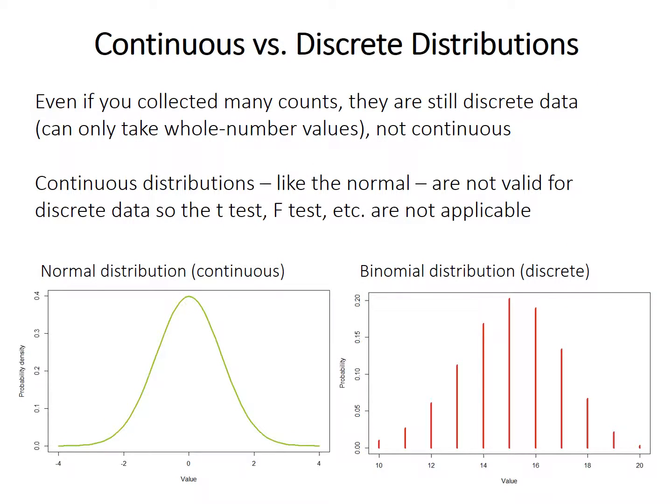But even if we did spend the time and collect many different counts, they're still discrete data, not continuous data. Parameters like standard error or variance only apply to continuous data. Therefore, tests that use variance or standard error, like the t-test, f-test, or ANOVA, don't technically apply to this type of discrete data.